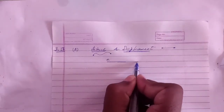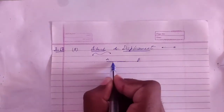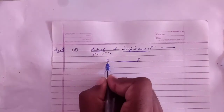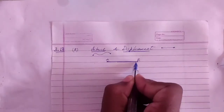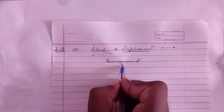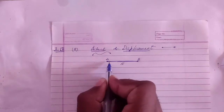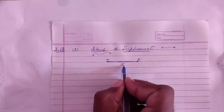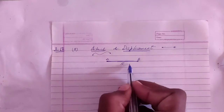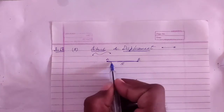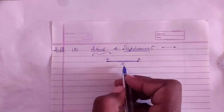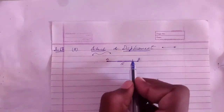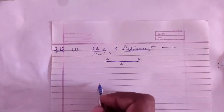Consider one-dimensional motion starting from point A going to point B in a straight line. The path length A to B is 5 meters. The distance is 5 meters and the displacement is also 5 meters. The direction of displacement is from A to B, and the magnitude of displacement is 5 meters — equal to the distance in this case.